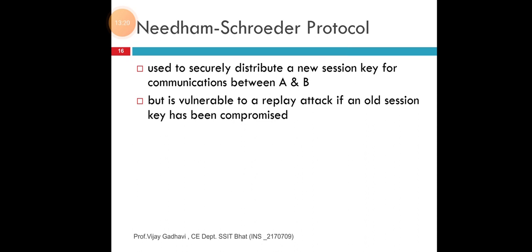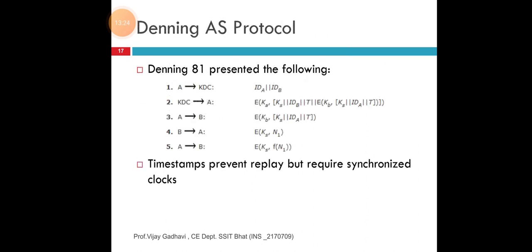Then, Denning's protocol — Denning '81 — presented the following. This is not a part of the syllabus, for knowledge only. Here you can see the algorithm and the various steps in which the parties communicate between source and destination: steps 1st, 2nd, 3rd, 4th, and 5th. A sends the request to KDC by particular IDs — the identification of party A and B. Similarly, KDC acknowledges to party A, then A to B, B to A, and A to B — how to communicate. This elaborates the sequence of securing your data and transmission in a secure manner using Denning's protocol.